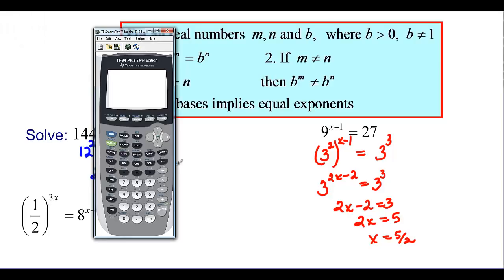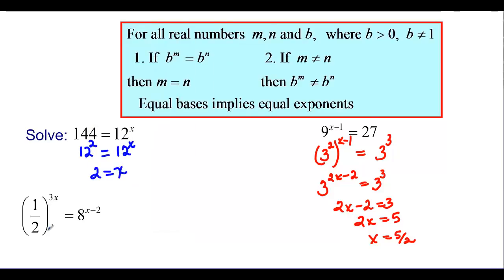We can double-check that on the calculator: 9 to the power of (5 divided by 2, minus 1) — remembering order of operations, it divides before subtracting — and that should equal 27. It does, so we know we did it right.